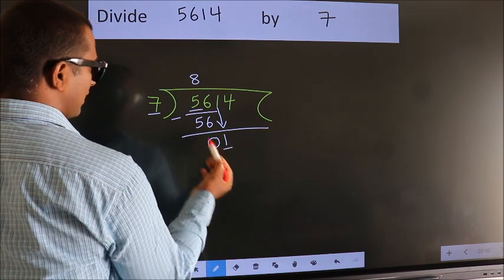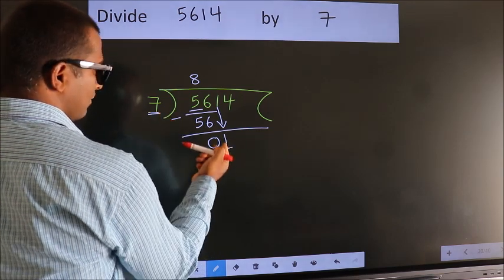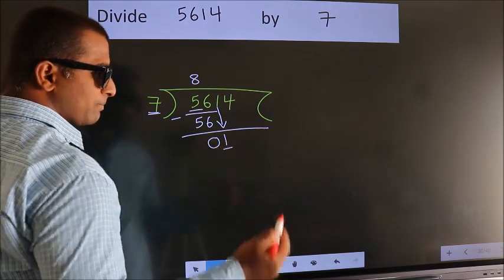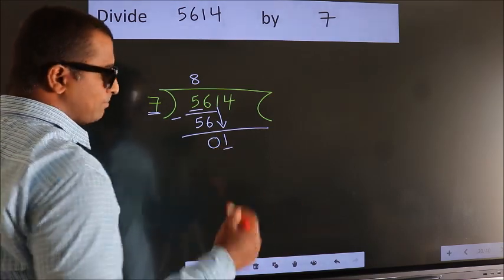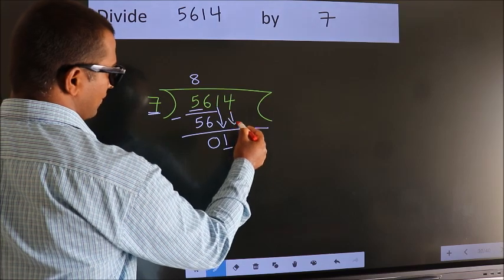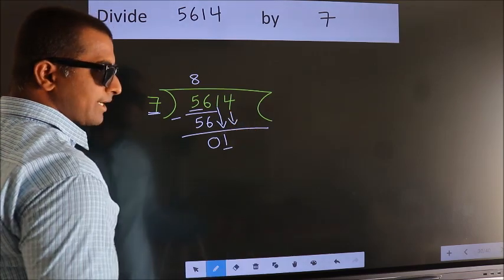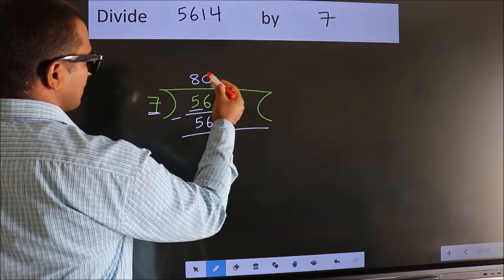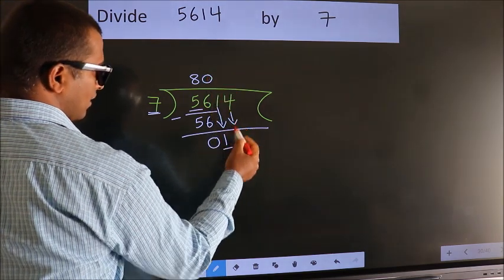Here we have 1. Here 7. 1 is smaller than 7. So we should bring down the second number. And the rule to bring down the second number is put 0 here. Then only we can bring down this number.